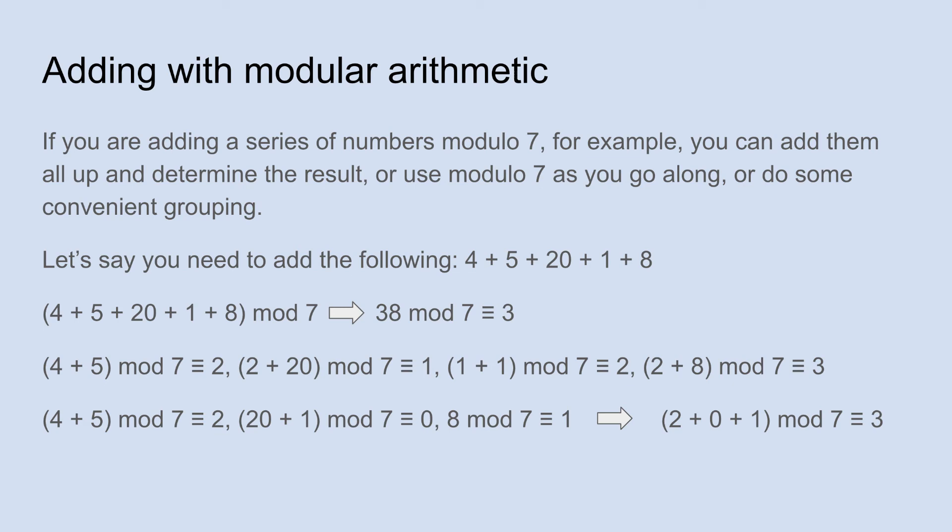So let's say the numbers are 4, 5, 20, 1, and 8. So you add them all up, you get 38. And then figure out what 38 mod 7 is, and that is 3, because 38 divided by 7 is 5 with remainder 3, or 38 is 3 more than 35, whichever way you want to look at it.